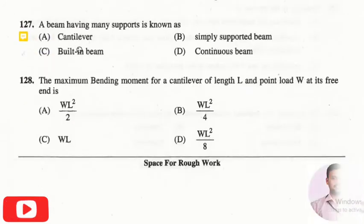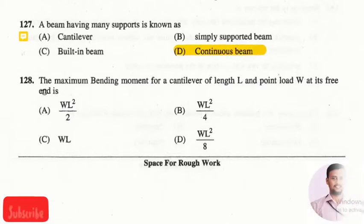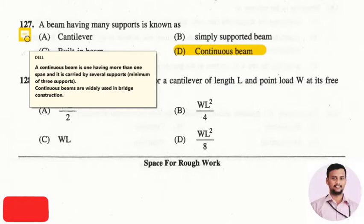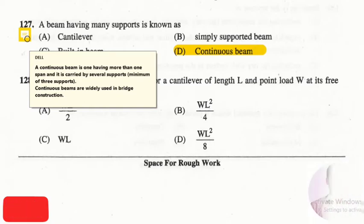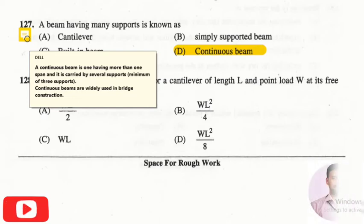The next question is: a beam having many supports is known as? The right answer is option four, that is a continuous beam. A continuous beam is one having more than one span, carried by several supports, and must have a minimum of three supports. Continuous beams are widely used in bridge constructions.